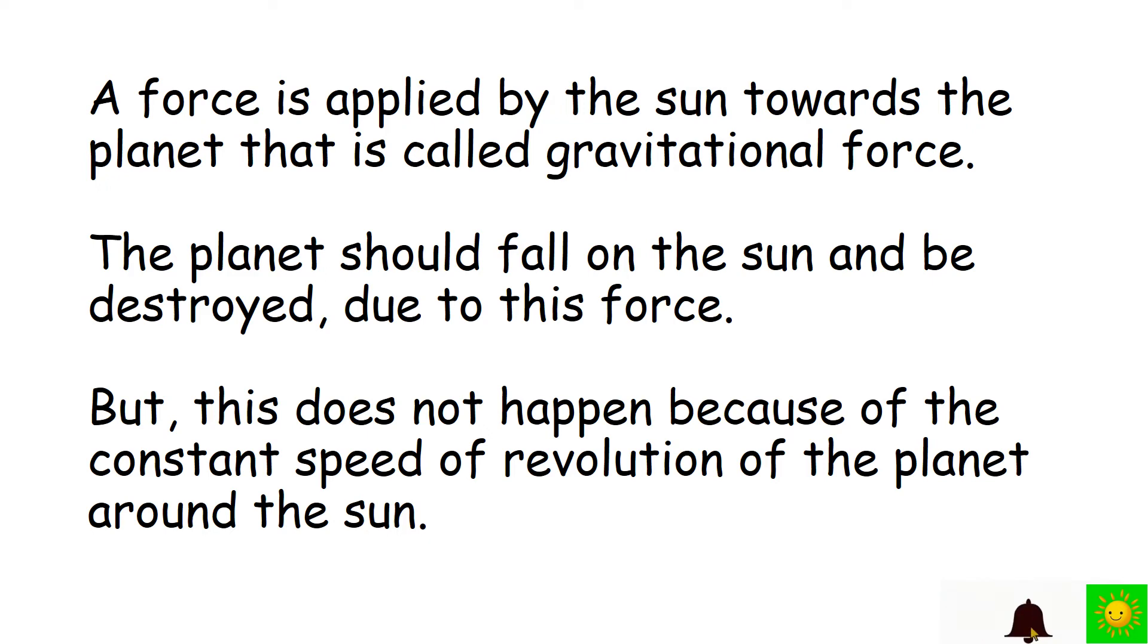Corresponding to the example given here, revolution of planets around the Sun also can be explained. Comparative to the force applied by the arm towards a ball, a force is applied by the Sun towards a planet. That is called gravitational force. The planet should fall on the Sun and be destroyed due to this force, but this does not happen because of the constant speed of revolution of the planet around the Sun.